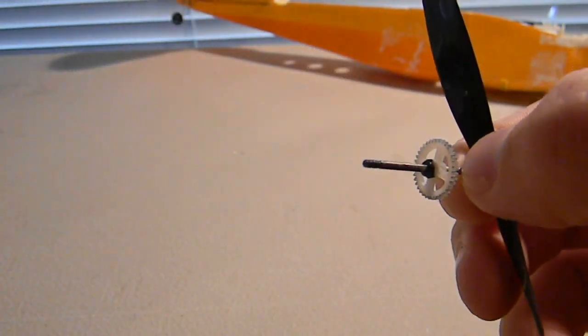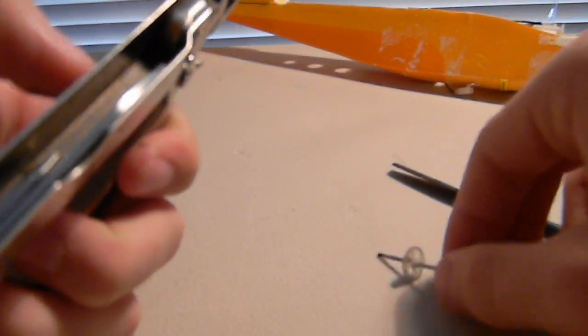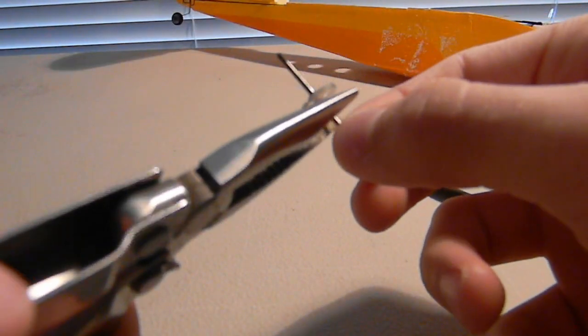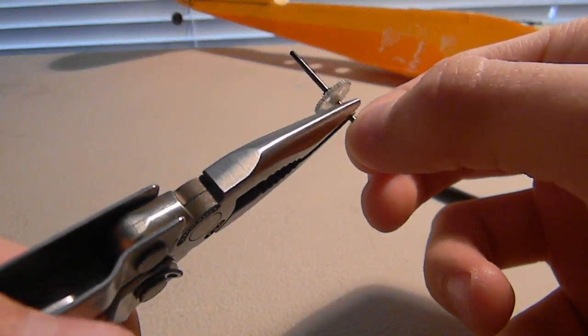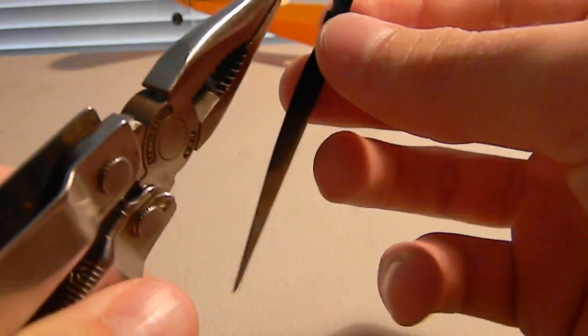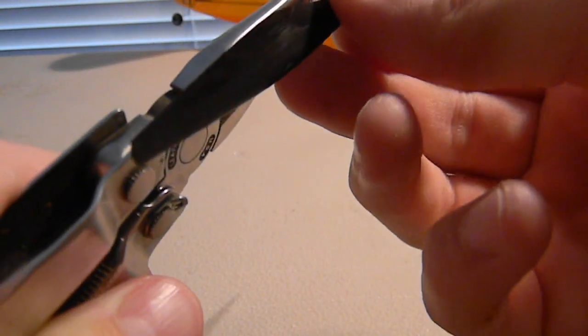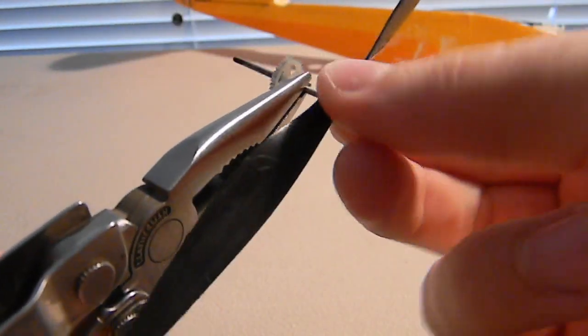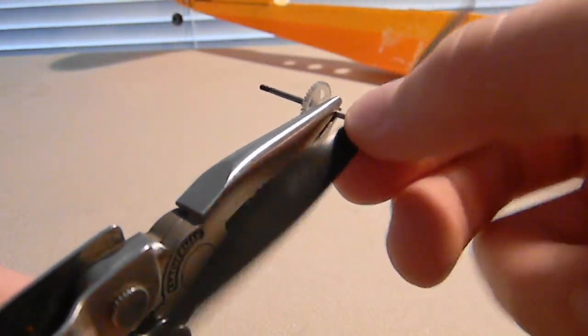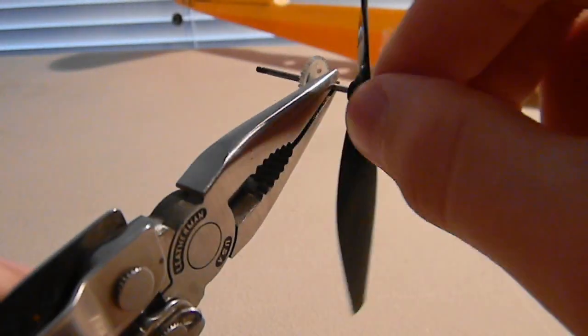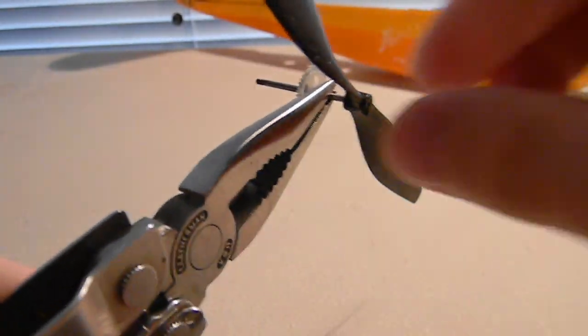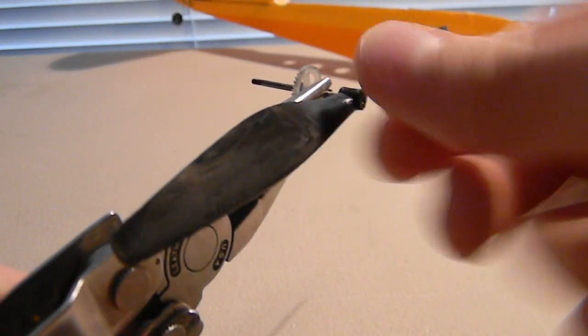Grab your needle nose pliers again and grab it in the same spot as before, in front of the gear. Put it on and twist it this way until it gets screwed on nice and tight.